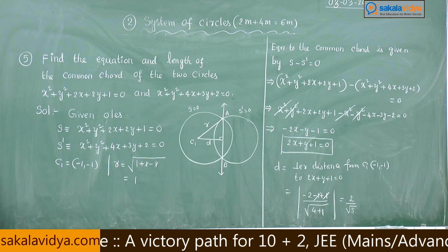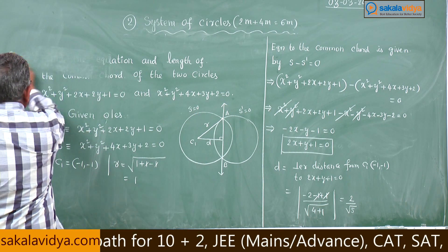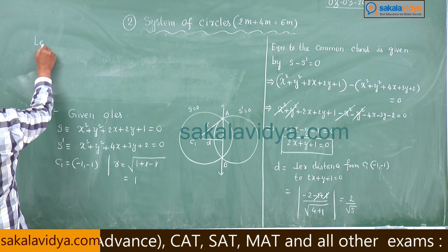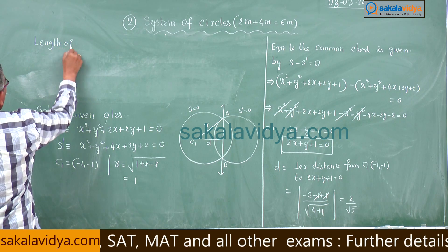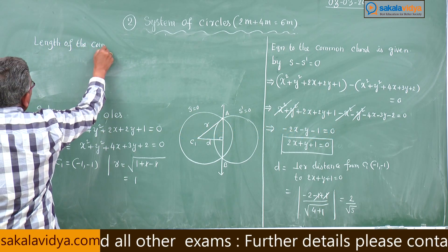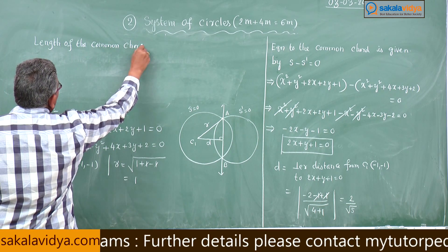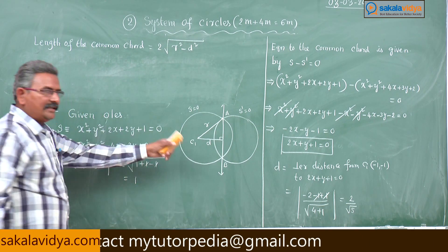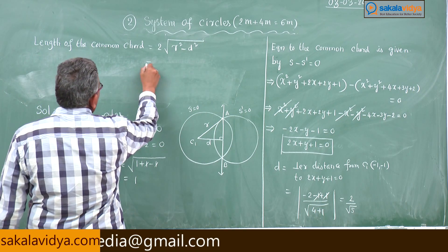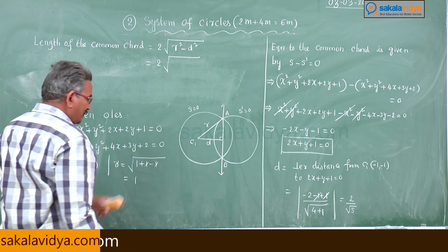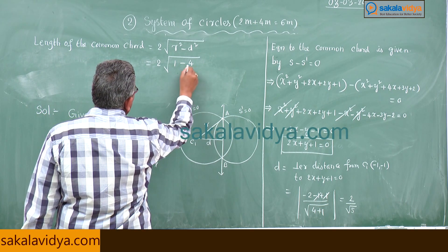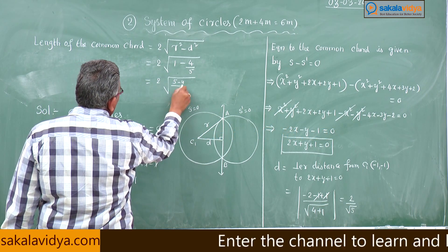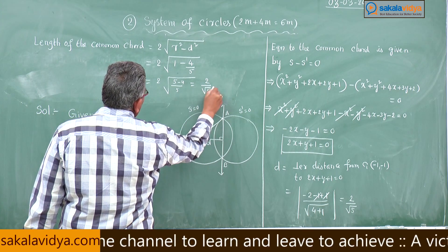Now find the length of the common chord. Since r > d, the length equals 2√(r² − d²) = 2√(1 − 4/5) = 2√(1/5) = 2/√5 units.